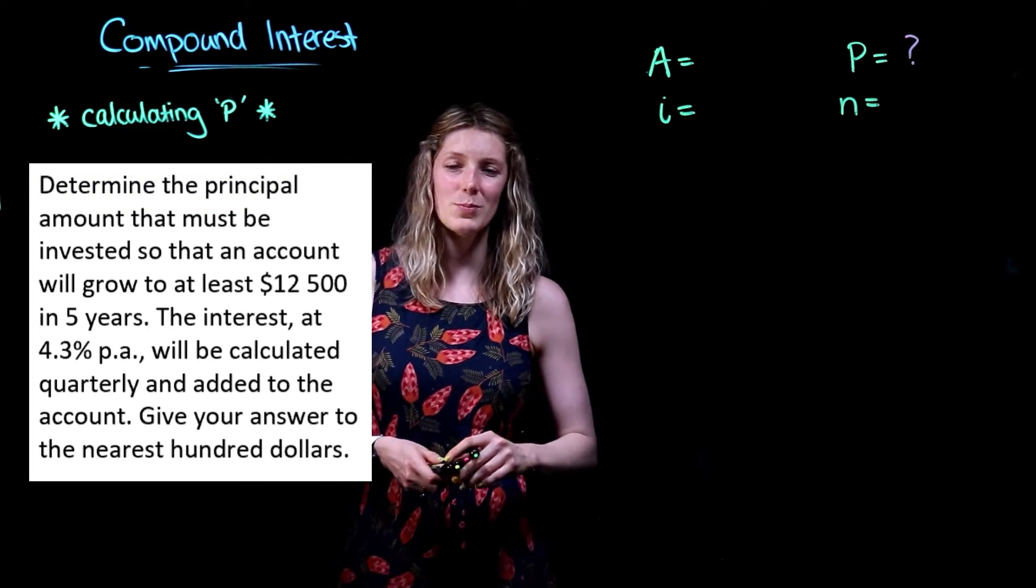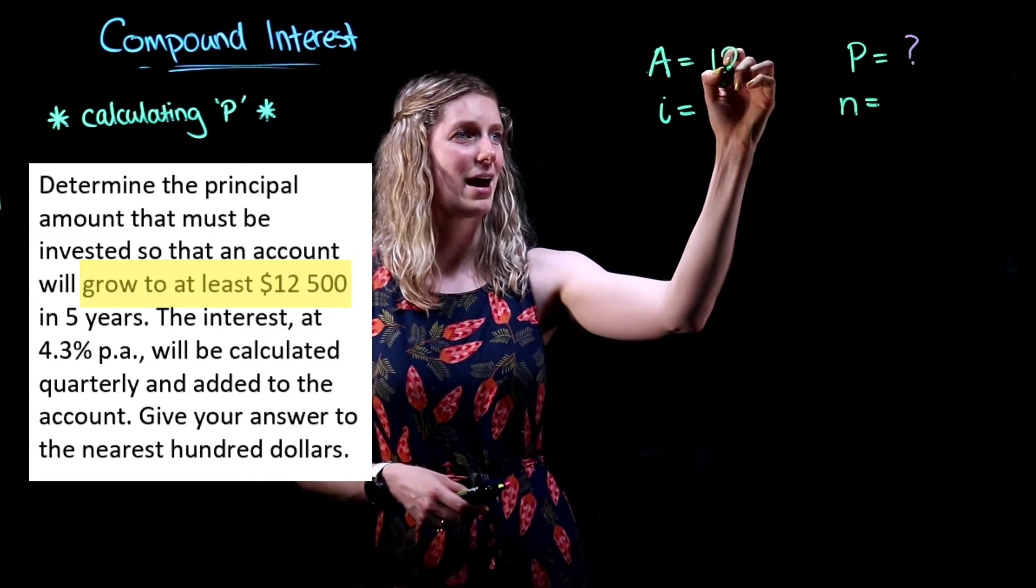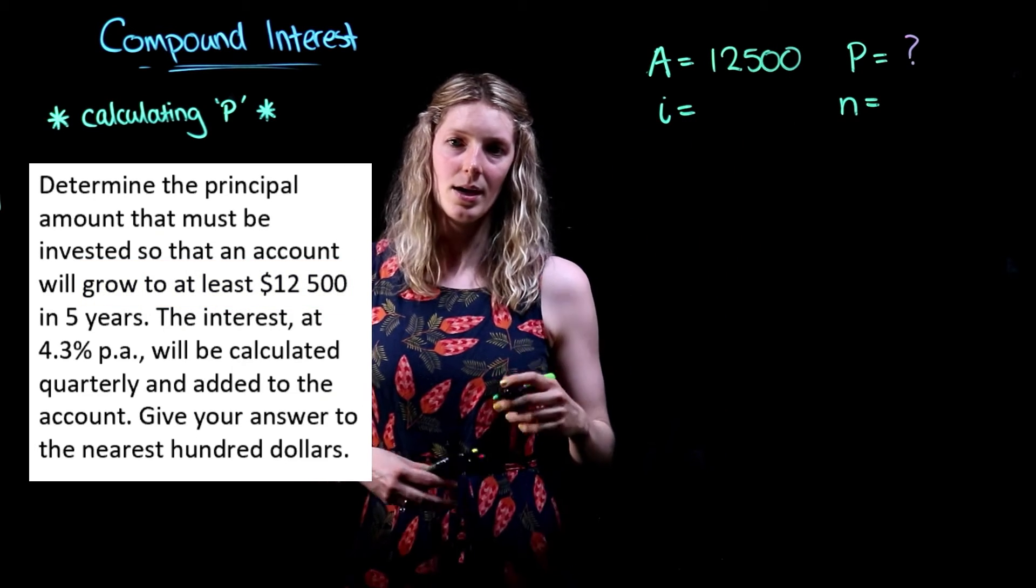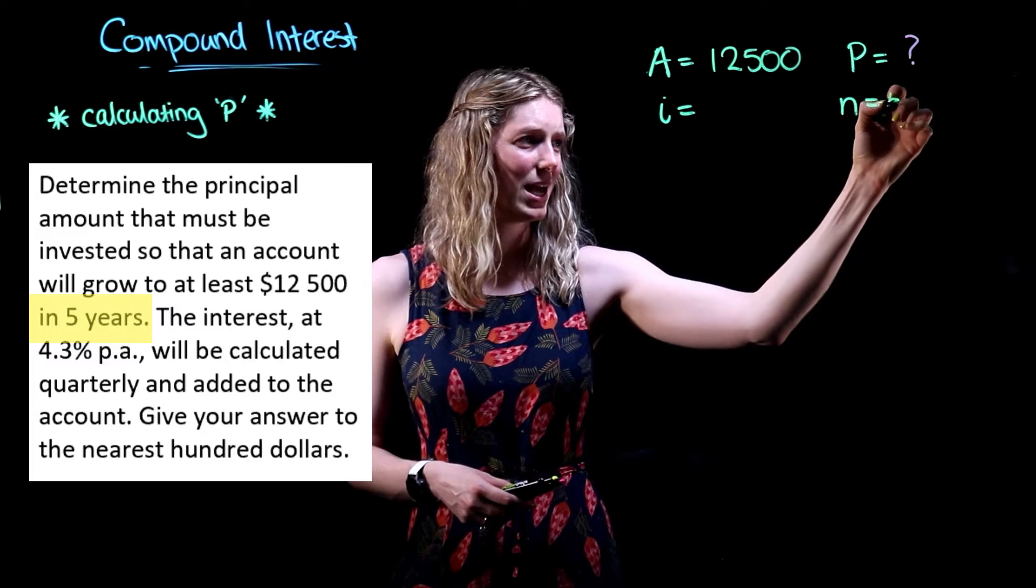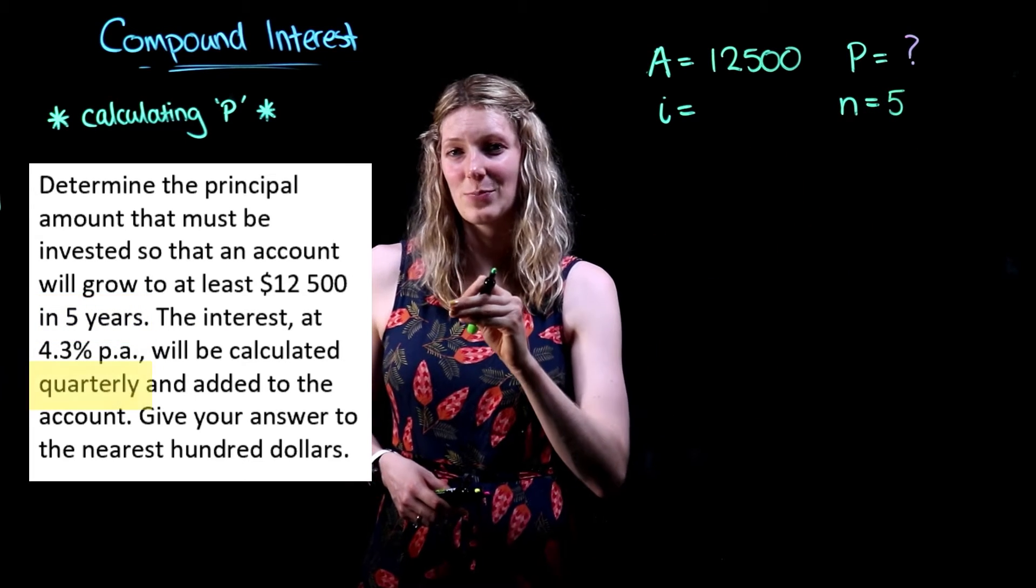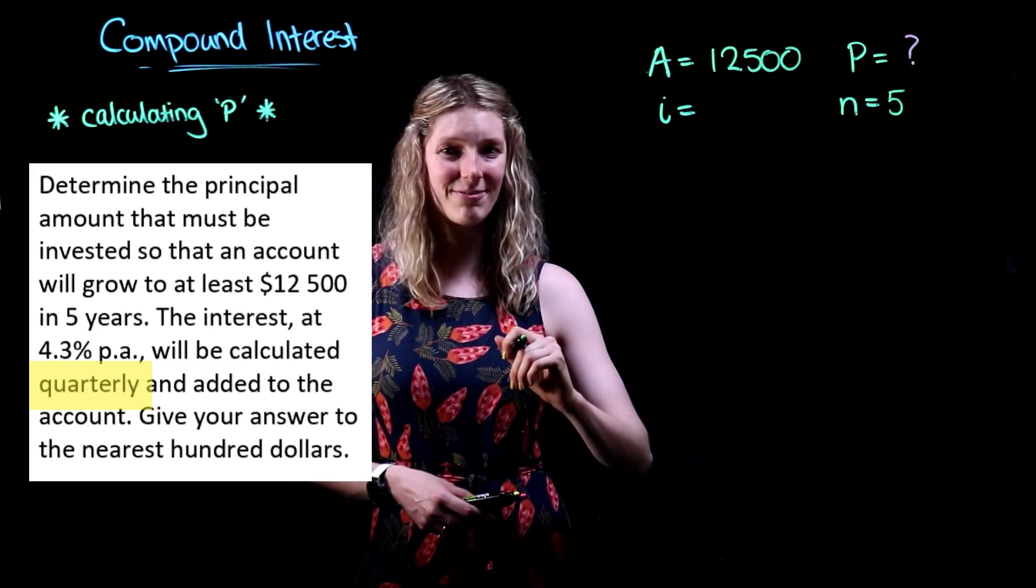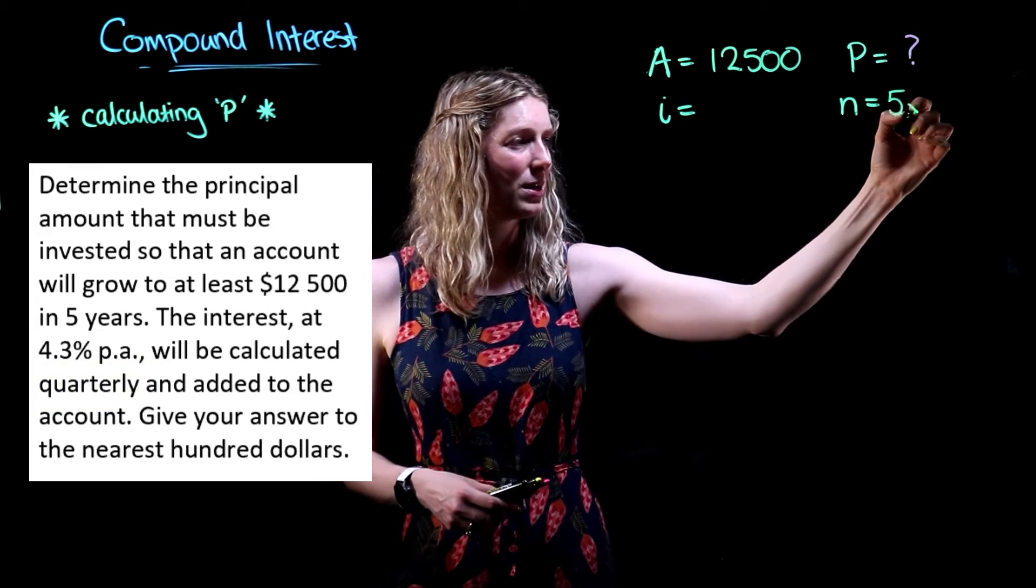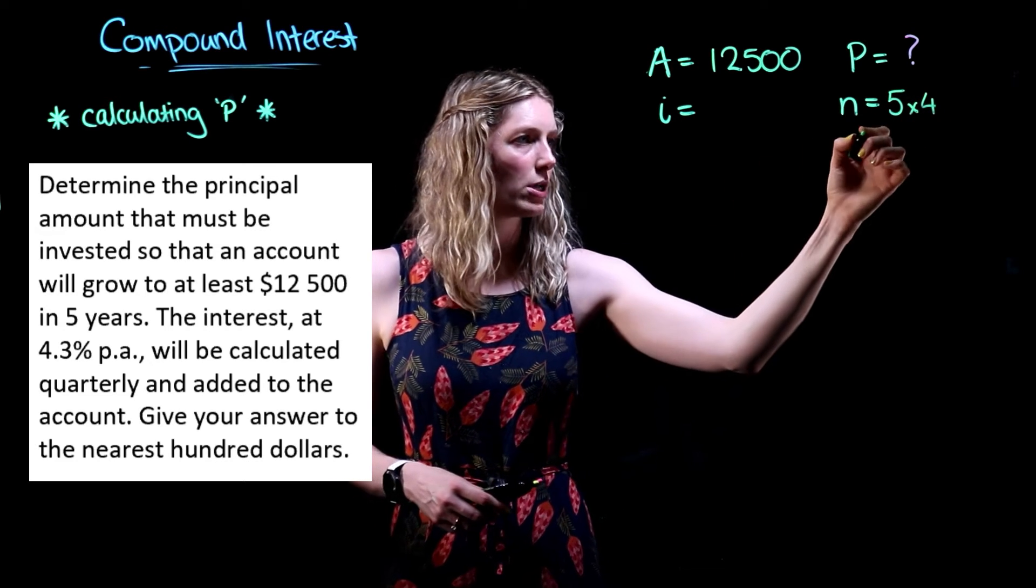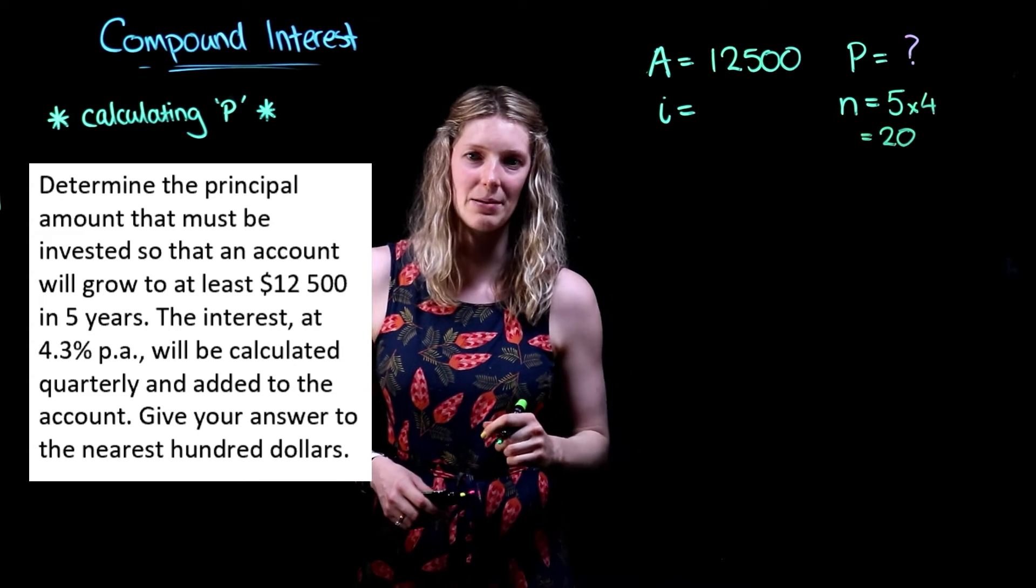We also want this investment to grow to $12,500, so we have our final investment amount. This is across five years, so we're going to have an n of five. However, this investment is compounding quarterly, so that means within these five years there's going to be four times per year where our interest is compounding. So our n is actually going to be 20 compounding periods.